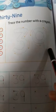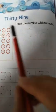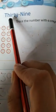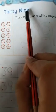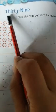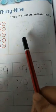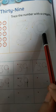So this is number 39, 3, 9, 39. T-H-I-R-T-Y, 30. N-I-N-E, 9, 39. So you have to trace this number with a crayon.